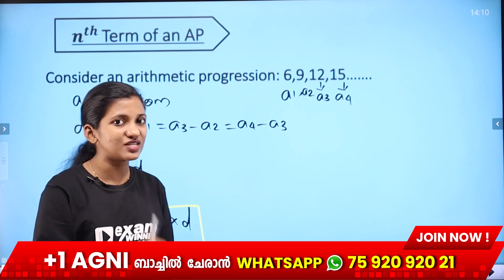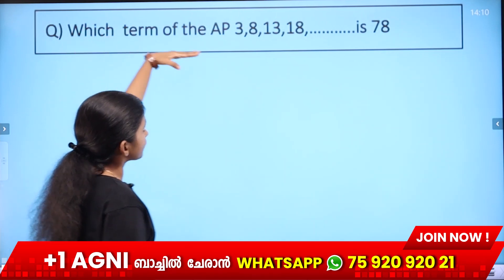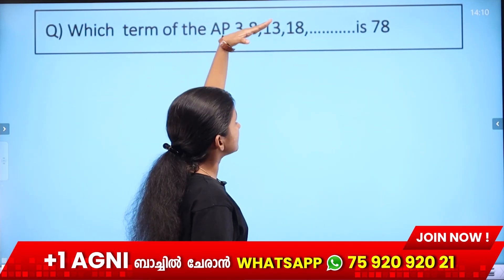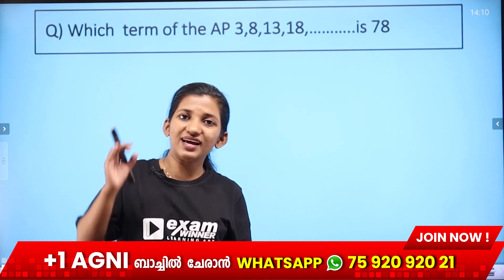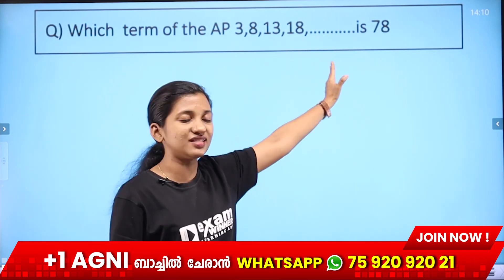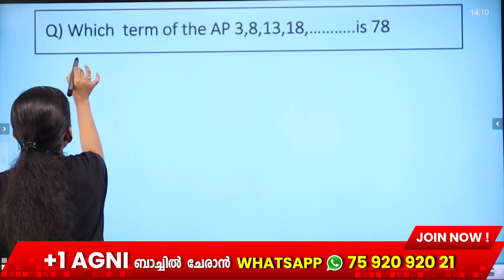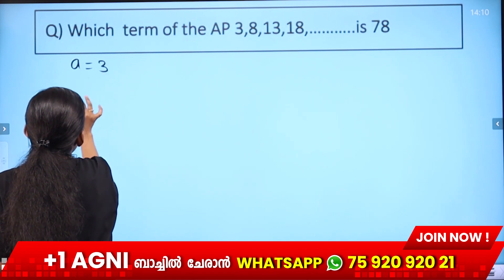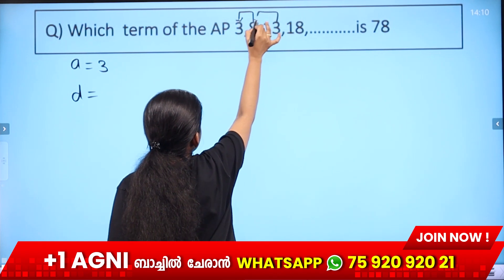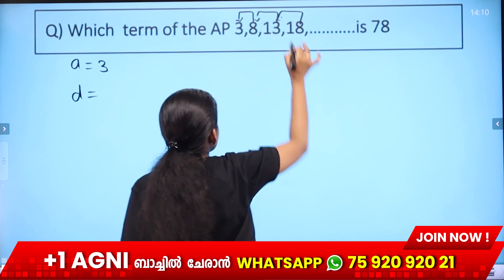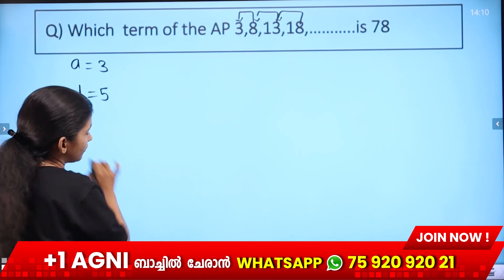Next, we have to solve these equations. First problem: which term of the AP 3, 8, 13, 18, etc. is 78? In this arithmetic progression, the first term a equals 3, and the common difference d equals second term minus first term. So a2 minus 3 gives the common difference: 5. Which term is 78?